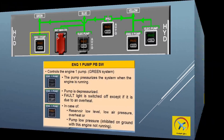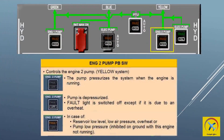Engine pump fault: the fault light illuminates amber when reservoir low level, reservoir overheat, reservoir low air pressure, or reservoir low pressure — inhibited on the ground with engine stopped. The engine pump fault light extinguishes when the engine pump switch is selected off, except during an overheat, when the light remains illuminated as long as the overheat is present.